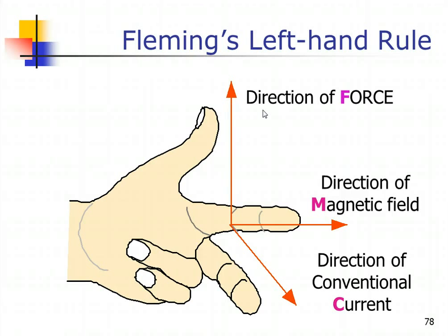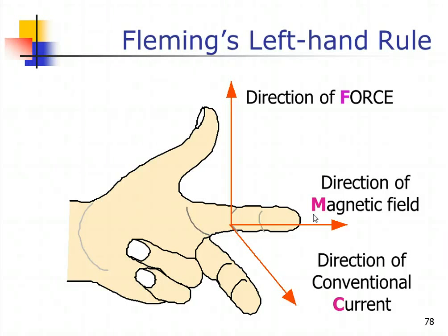We determine the direction of the force between the copper rod with a current through it and the permanent magnetic field by using Fleming's Left-Hand Rule. The thumb tells you the direction of the force on the conductor carrying the electrical current. The pointer finger tells you the direction of the magnetic field caused by the permanent magnet. The middle finger tells you the direction of the conventional current — it points in the direction of current flowing inside the conductor.